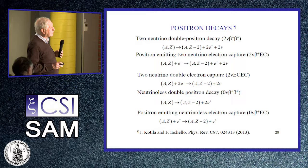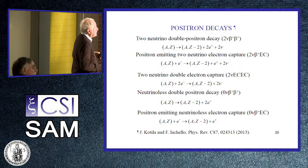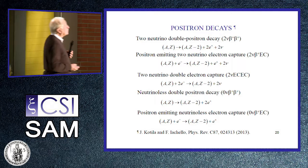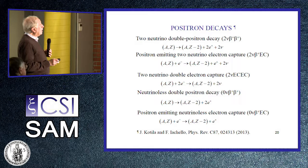For neutrinoless double positron decay, there is the same situation for two-positron emission or for positron plus electron capture, called zero-nu beta-plus electron capture. However, zero-nu double electron capture cannot occur because we cannot conserve energy-momentum. The two electrons disappear and are absorbed by the nucleus, but there is no mechanism to carry away the energy and momentum, so that process cannot occur.